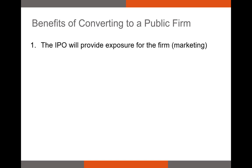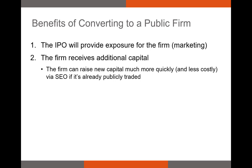There are several benefits of converting from a privately held firm to a publicly traded firm. First, the IPO process will make international news and get people who haven't done business with the firm more interested in its products. For example, when Beyond Meat undertook its IPO, it prompted many people to try one of the firm's burgers. The second benefit is that the firm receives much needed capital — firms can raise a large amount via an IPO. When Saudi Aramco undertook its IPO, it raised $25.6 billion US, the largest IPO in history, illustrating the amount of cash that can be raised by going public. Public firms can also issue SEOs to raise additional cash.